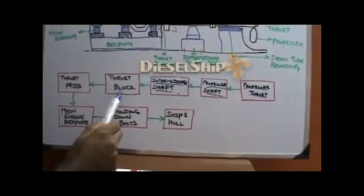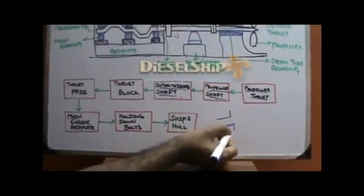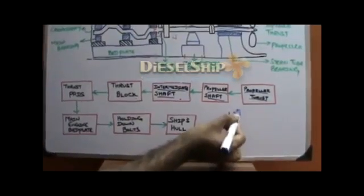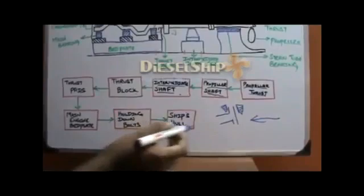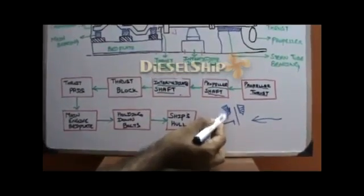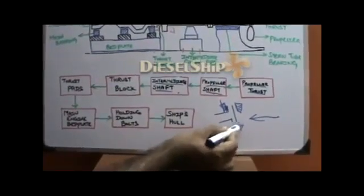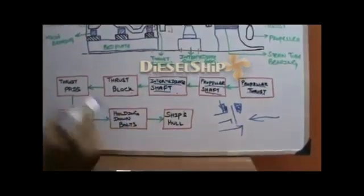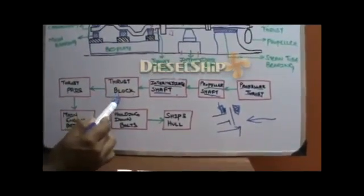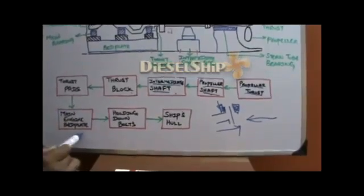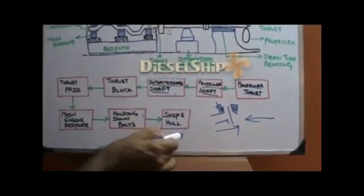The thrust block is placed at the aft-most part of the main engine so that no part of the crankshaft is subjected to propeller thrust. The thrust block has thrust pads on both sides of the crankshaft. When the propeller thrust acts in a ahead direction, these pads take the thrust and prevent further motion to the crankshaft. When the ship moves in a stern direction, the other set of pads takes up the thrust. Since the thrust pads are inside the thrust block, which is bolted to the bed plate via holding-down bolts secured to the ship's hull, the ship starts to move.